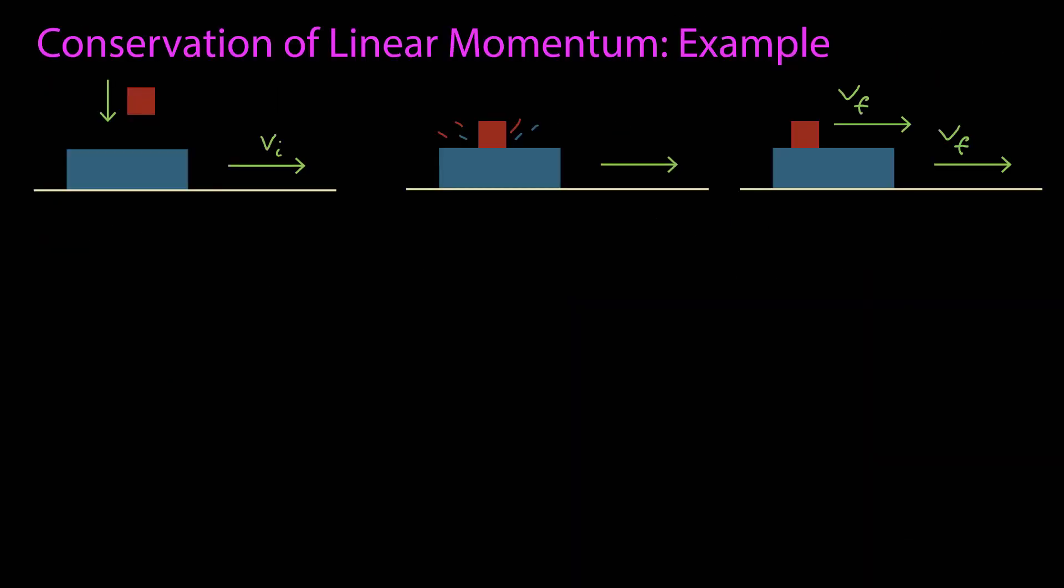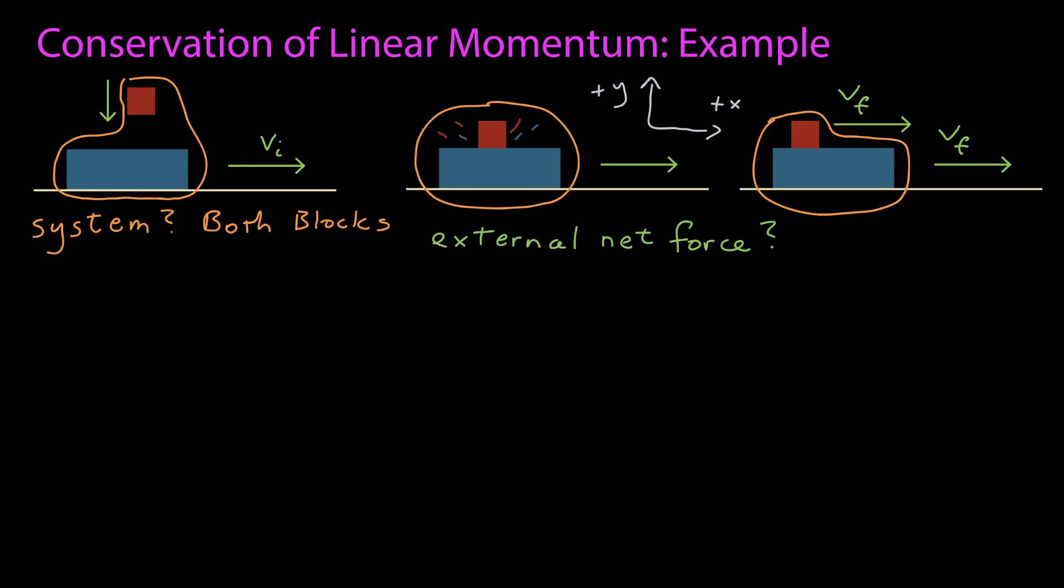So let's take a look at this example using conservation of linear momentum. First, we need a system. And the system is going to be both blocks together. Now we need to know, is there an external net force on that system? And we have to look at each dimension individually.